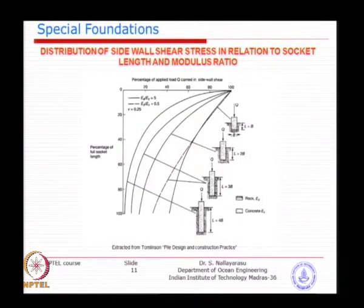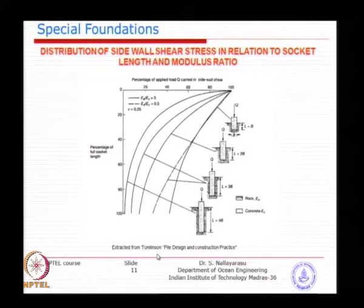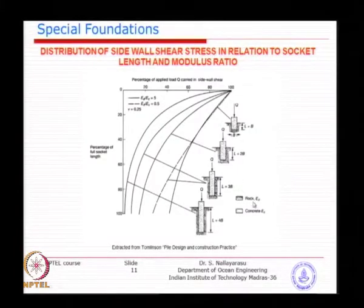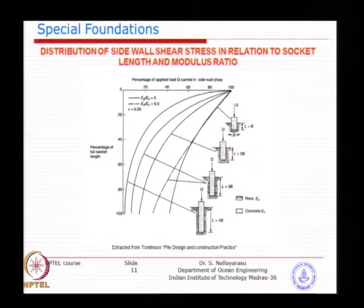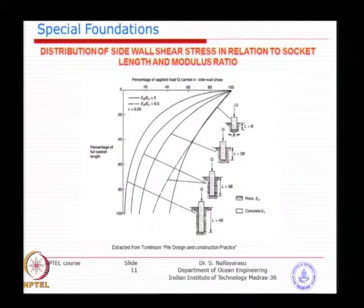In case you have a combination of skin friction and end bearing, several tests have been conducted. The book by Tom Linson has collected all that information and produced a chart. For a socketed pile — constructed within a layer by 3 to 4 diameters — the remainder will take skin friction, giving some amount of end bearing and some amount of skin friction.